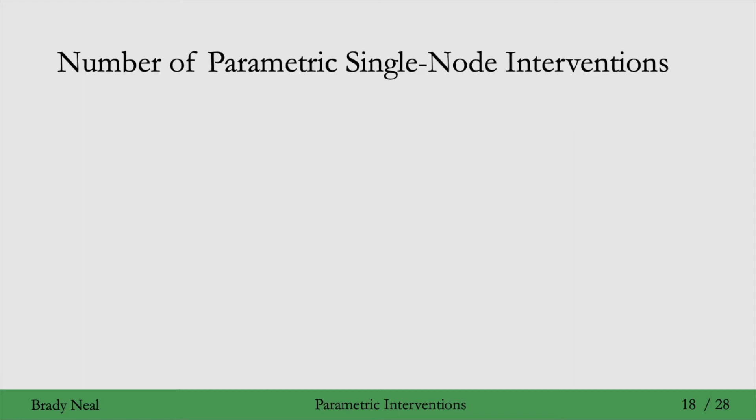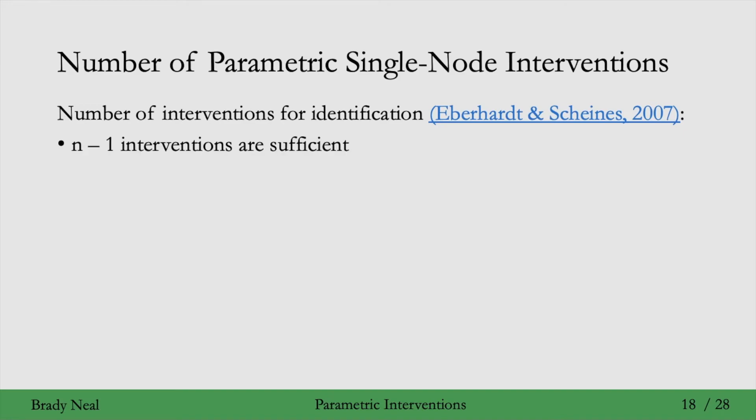We'll first consider the number of interventions needed for the single node case when doing single node parametric interventions. How many single node parametric interventions do we need to identify the causal graph? It turns out that n-1 interventions are sufficient, and n-1 is also necessary in the worst case. So with parametric interventions, we get the same numbers as with structural interventions. This comes from a paper from 2007.